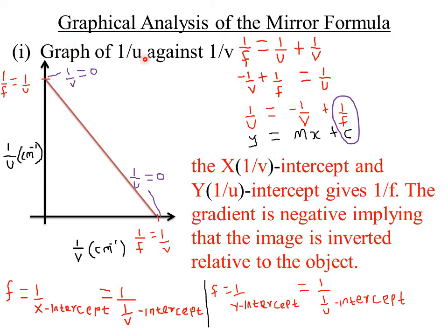The graph of 1/u against 1/v is always a straight line graph which originates from the vertical axis towards the horizontal axis. Remember, u means the object distance — that is the distance from the object measured from the pole of the mirror — and v represents the image distance, measured from the image towards the pole of a concave or convex mirror.